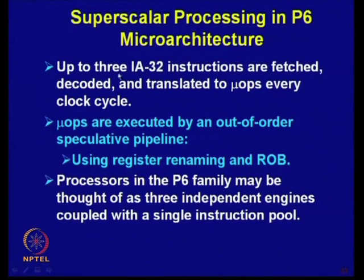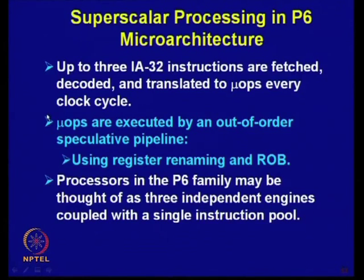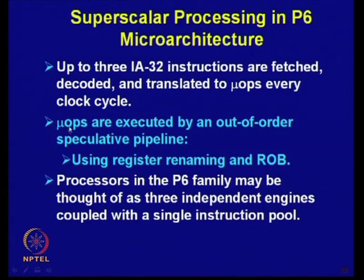In Pentium 6, up to three IA-32 instructions are fetched, decoded, and translated into micro-operations in every clock cycle. Micro-operations are executed by an out-of-order speculative pipeline, using speculative execution for executing the micro-operations. Register renaming and the reorder buffer — which have been discussed in detail — have been incorporated in Pentium 6 to facilitate out-of-order execution of micro-operations.